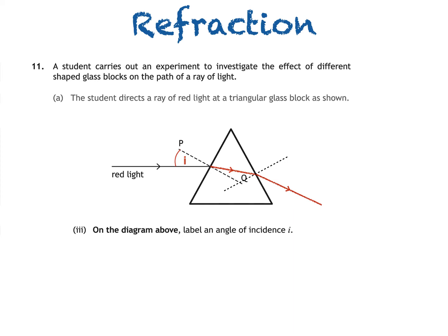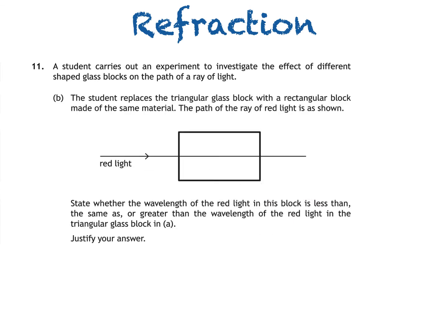Here's part B of the question. The student replaces the triangular glass block with a rectangular block made of the same material. The path of the ray of red light is as shown. We're then asked to state whether the wavelength of the red light in this block is less than, the same as, or greater than the wavelength of the red light in the triangular glass block in A.